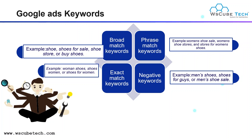After on-site keywords, we have Google Ads keywords, which we use when creating Google Ads for paid advertising. There are four types: broad match keywords, phrase match, exact match, and negative keywords. Broad match means your ad is visible whenever a user's search contains your keyword, like 'shoes' or 'shoes for sale.' Phrase match means your ad shows when users type your keyword with any suffix or prefix added, like 'women's shoes sales' or 'stores for women's shoes.'